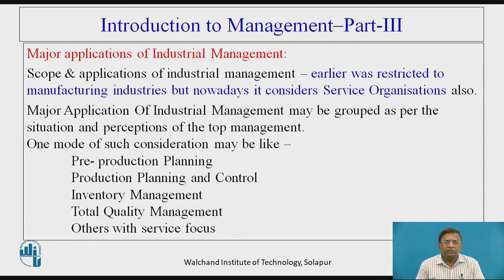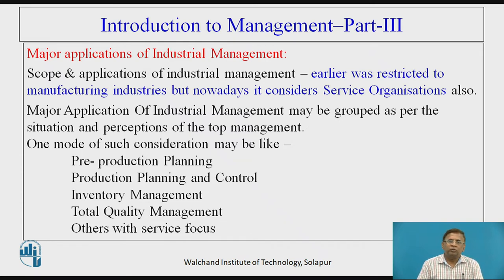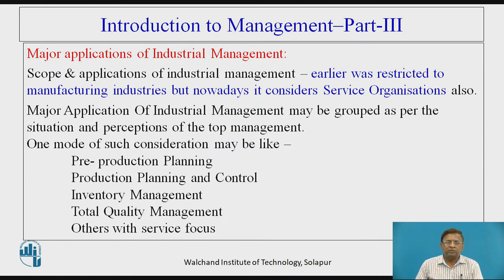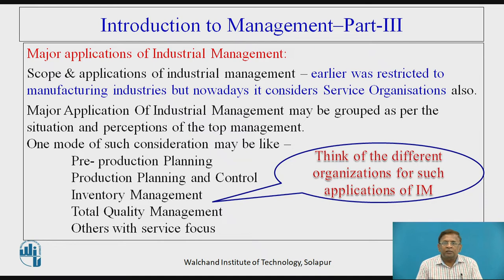Now, major applications — different authors might compile these in different groupings. There can be different perceptions and based on that there can be variations. Here, I am referring to one particular perception wherein pre-production planning, production planning and control, inventory management, total quality management, and some other functions form five groups. I request you to think of different organizations for such applications — both in manufacturing as well as service sectors — to correlate these applications.